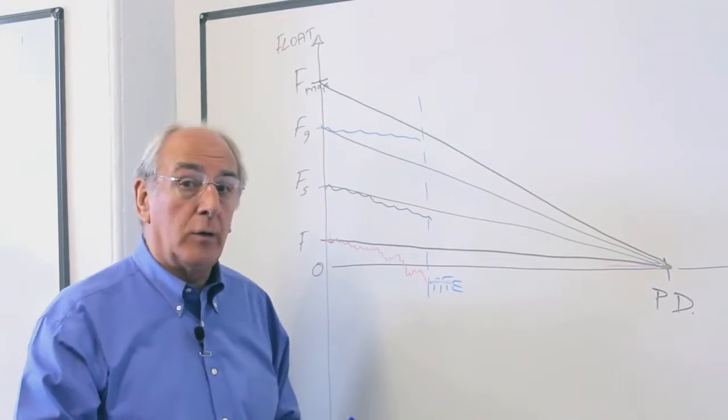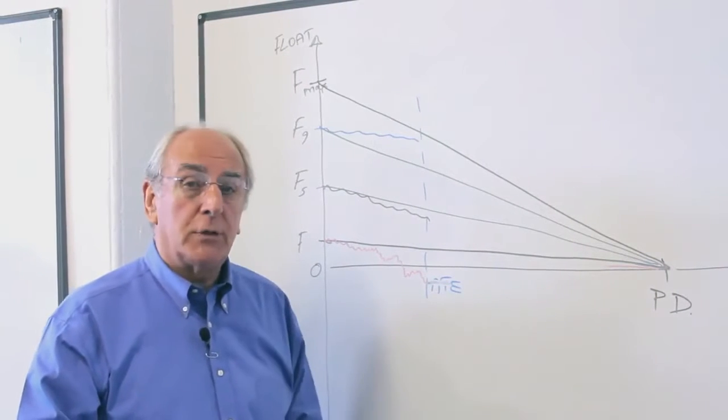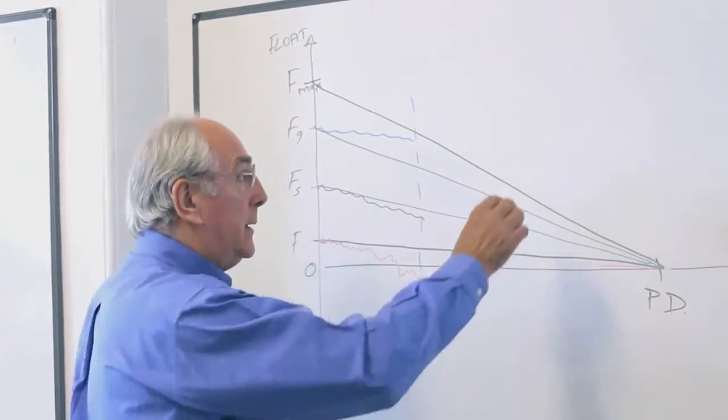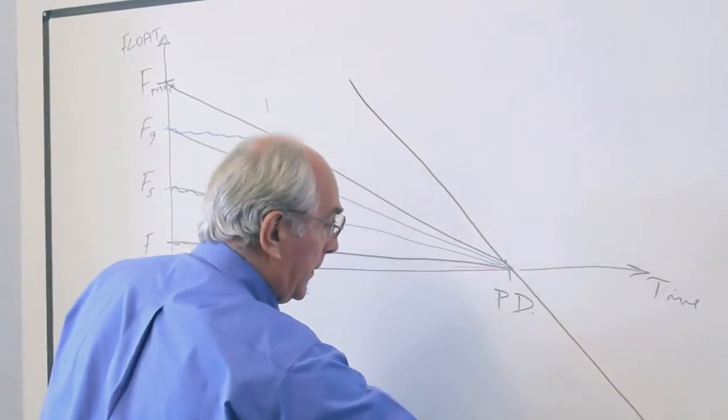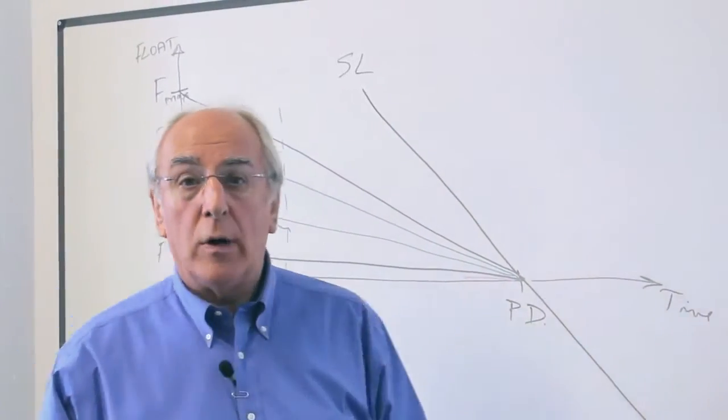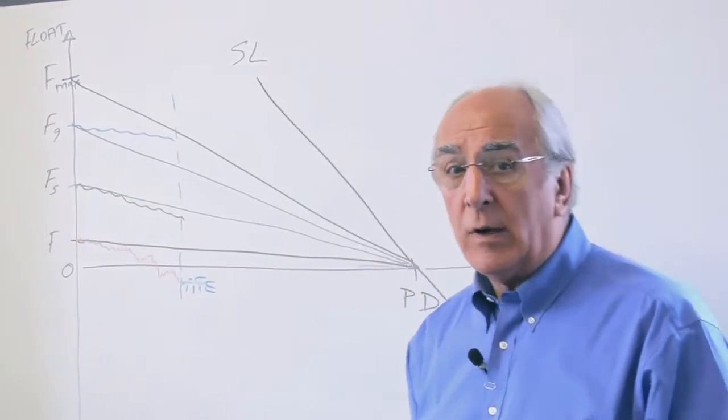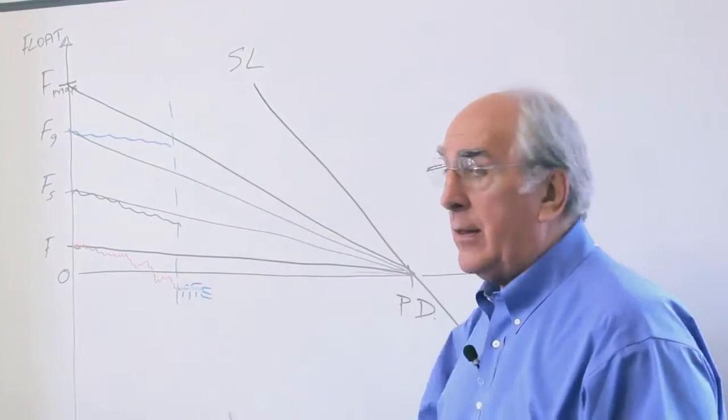Kilpatrick envisaged a line that he called the sensitivity line, and he drew the line through the project duration point. Let's just draw this line through there like that, so we'll put an SL up there for the sensitivity line. Now what is that sensitivity line? Well, it's a mechanism for translating lateness as shown by the loss of float into lateness on the project duration.